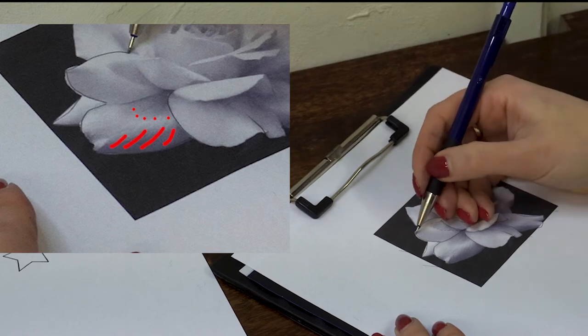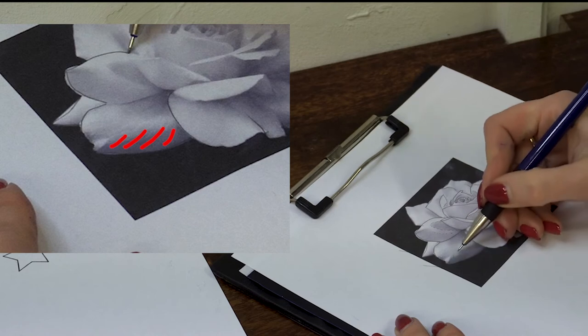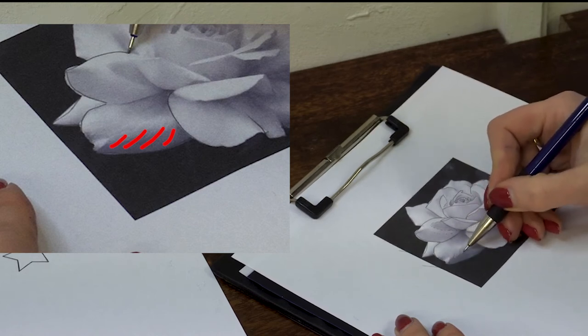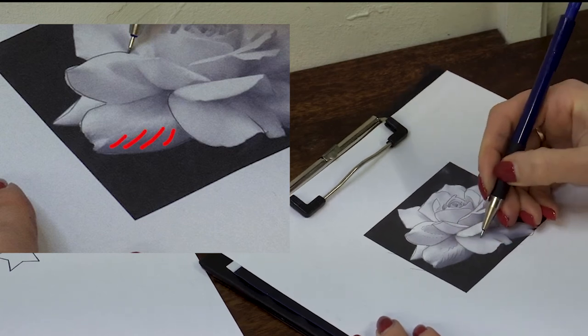You draw lines into the direction where the shadow is following.